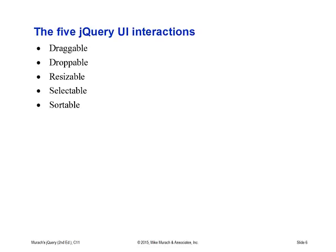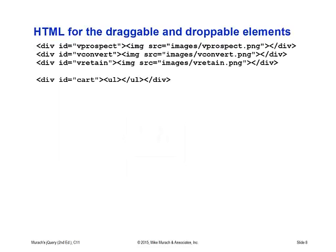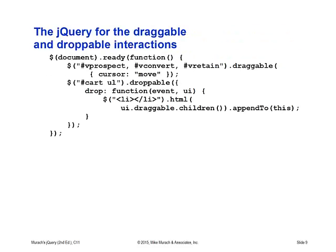We've already covered the resized element, but we also have selectable and sortable. Remember there's a sort function we're going to use in our week six assignment. On an e-commerce or consumer website, the ability to move something in and out of a cart — this looks like something from DreamSpark for adding and moving software to order. The jQuery code supports both adding something not in your cart and moving something out. The HTML supports drag and drop elements with div IDs for prospect, convert, and retain. The jQuery code uses the ready function, with prospect, convert, and retain of the draggable using cursor move, and then the drop function with event UI using a children hierarchy.